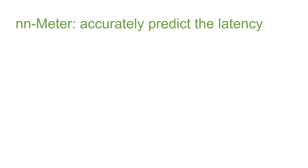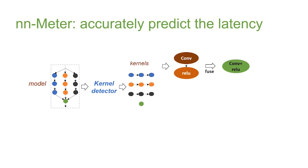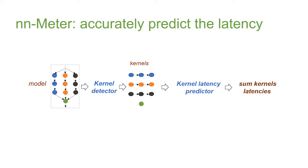We introduce NN Meter. It splits the whole model graph into kernel units. The kernel naturally captures the most important runtime optimizations - operator fusion. Then we build latency predictors for these kernels. We predict the latency of each kernel and sum all of them as the final model latency.